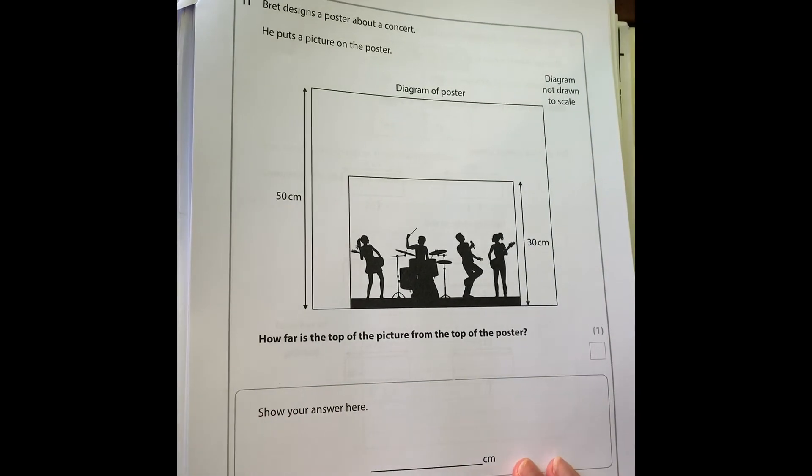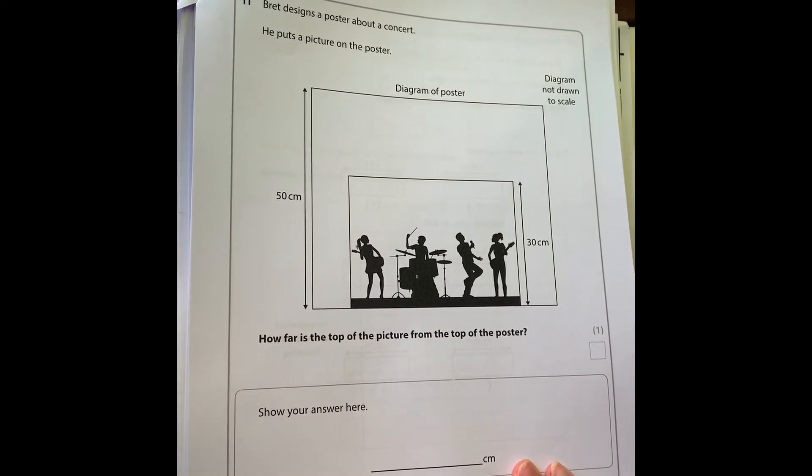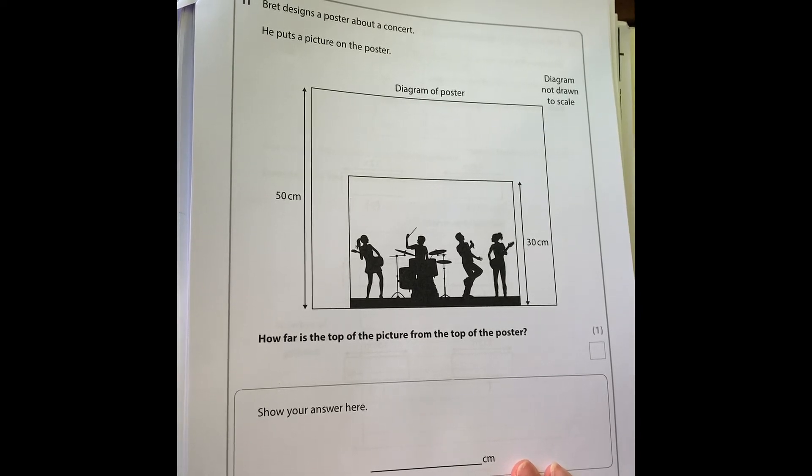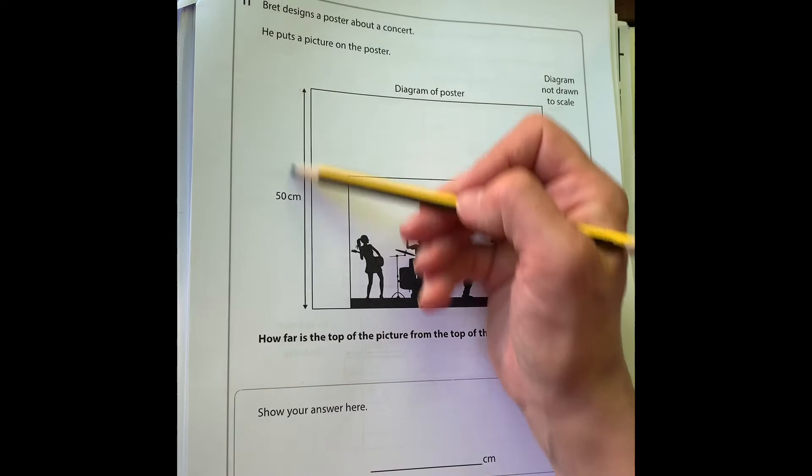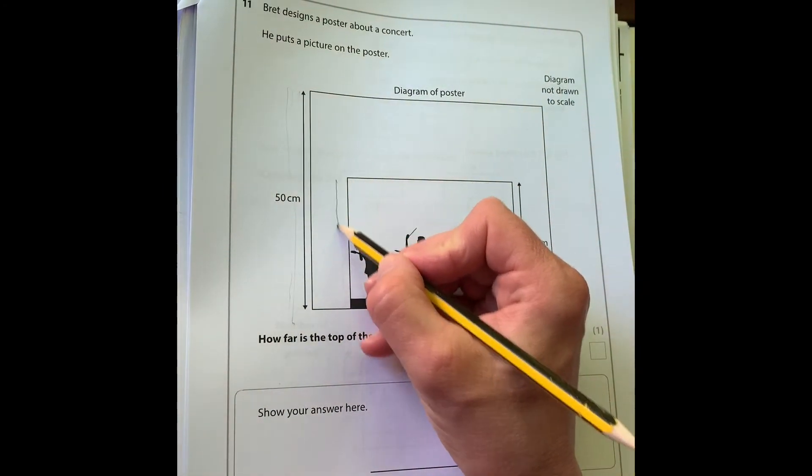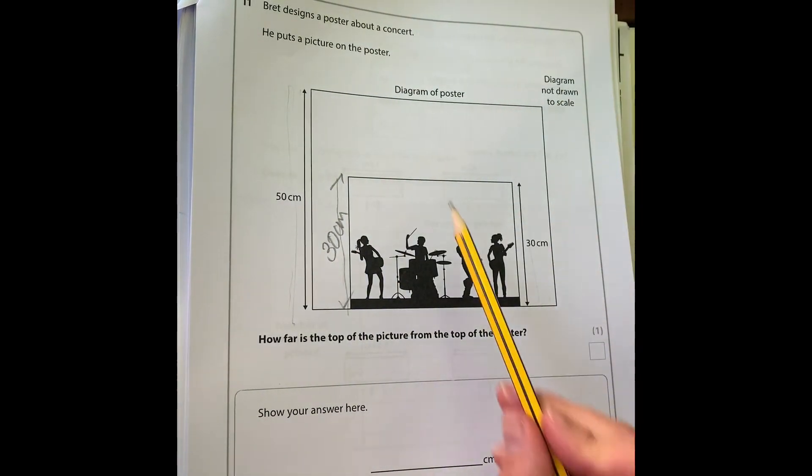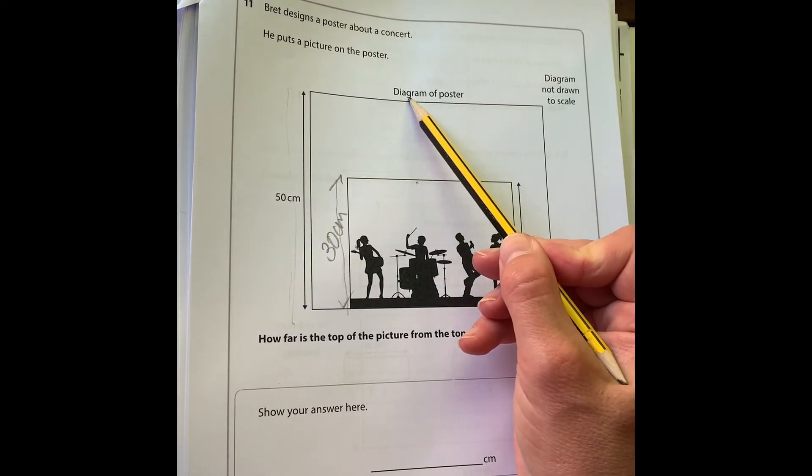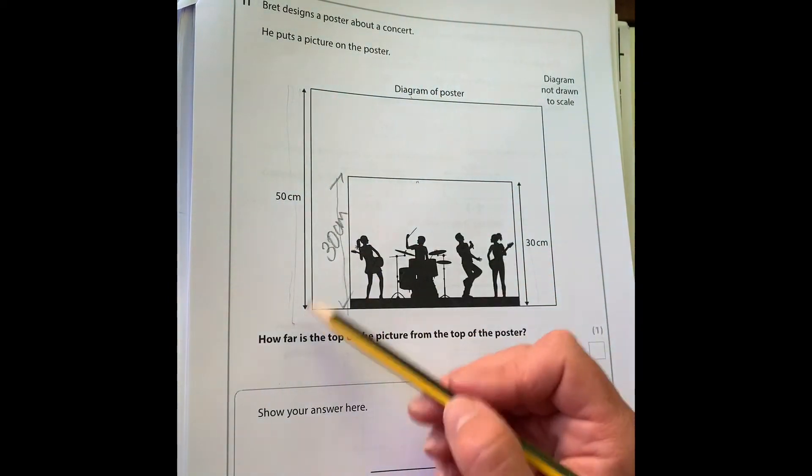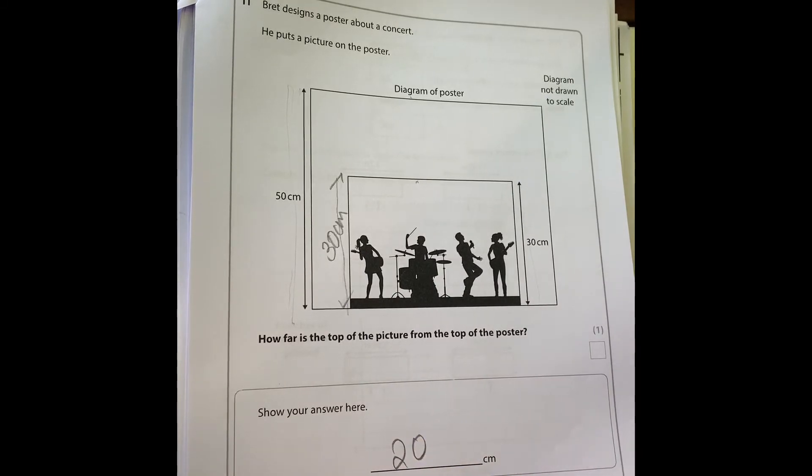Brett designs a poster about a concert. He puts a picture on the poster. How far is the top of the picture from the top of the poster? We can see we've got 50 centimeters down here, 30 centimeters here, so this is also 30 centimeters here. So the picture from the top will be 50 take away 30: 20 centimeters.